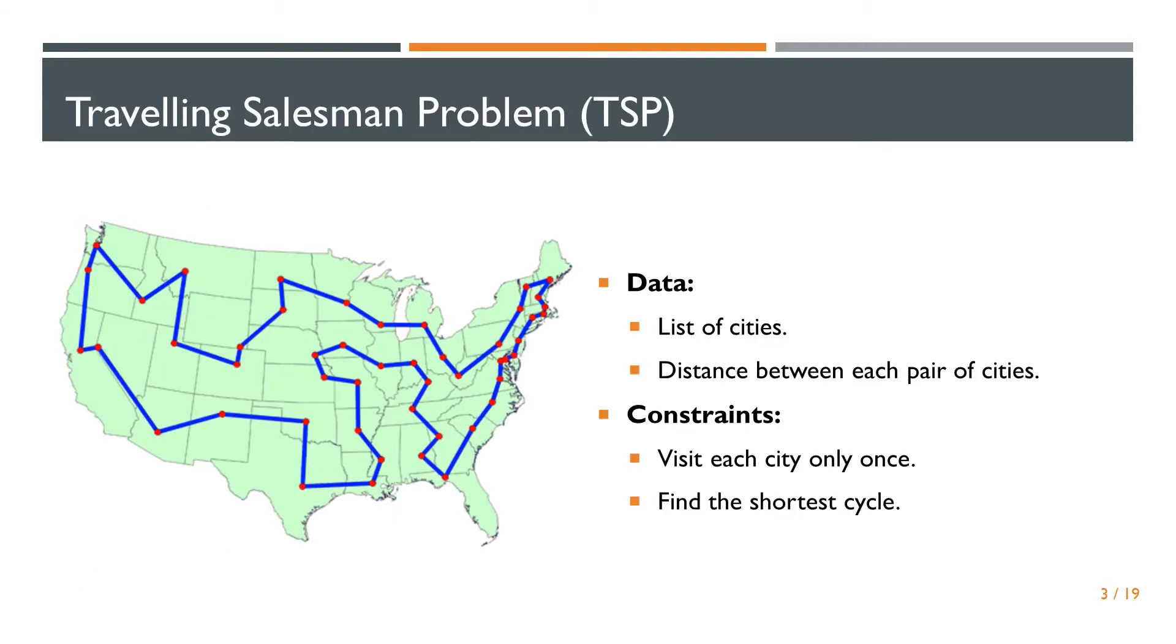The Travelling Salesman problem is NP-hard or NP-complete, depending on the variance. It offers data, a list of cities and the distance between each pair of cities. This problem is constrained with two constraints. The first is to visit each city only once. The second is to find the shortest cycle. The TSP is a fundamental problem in computer science motivated by many applications in the industry. Here, on the left, we can see the map of the USA and the solution of the TSP going through each red cities by blue edges.